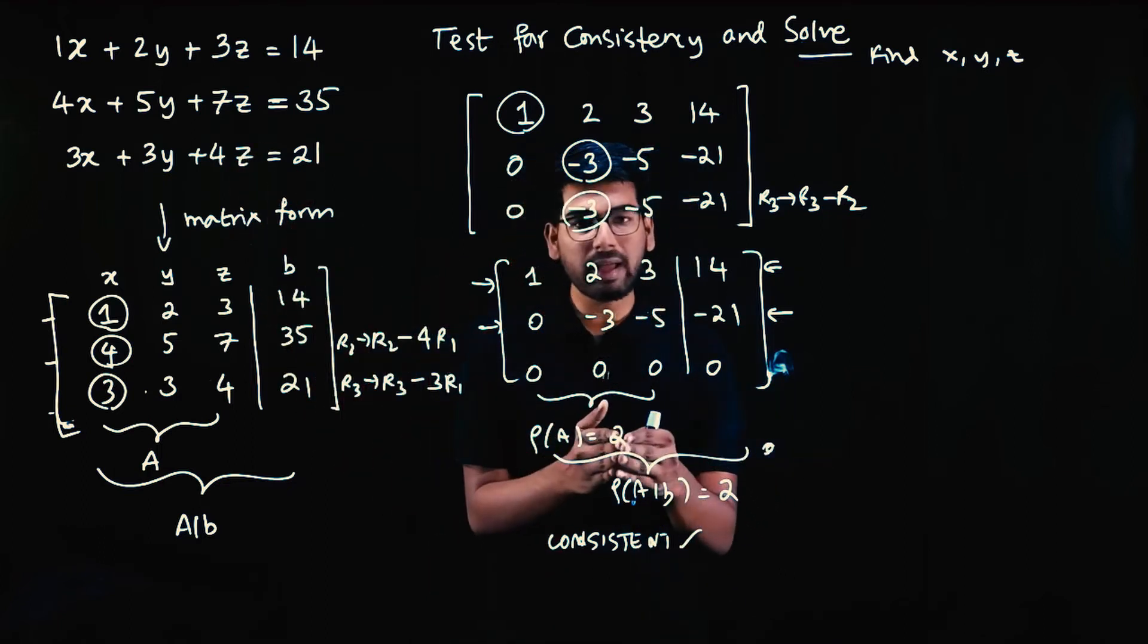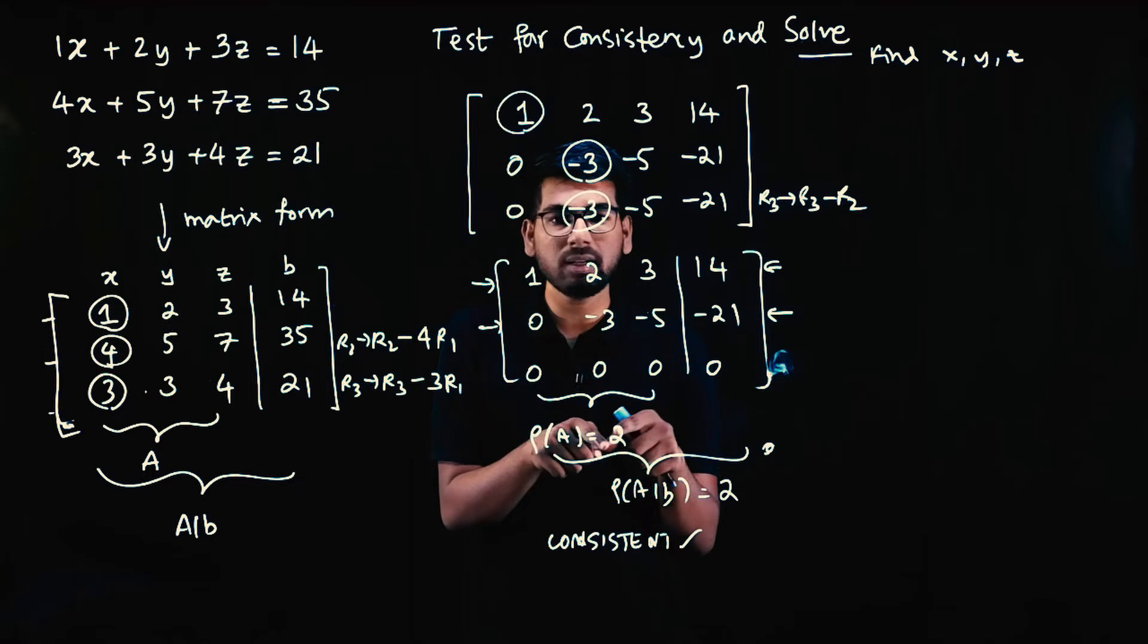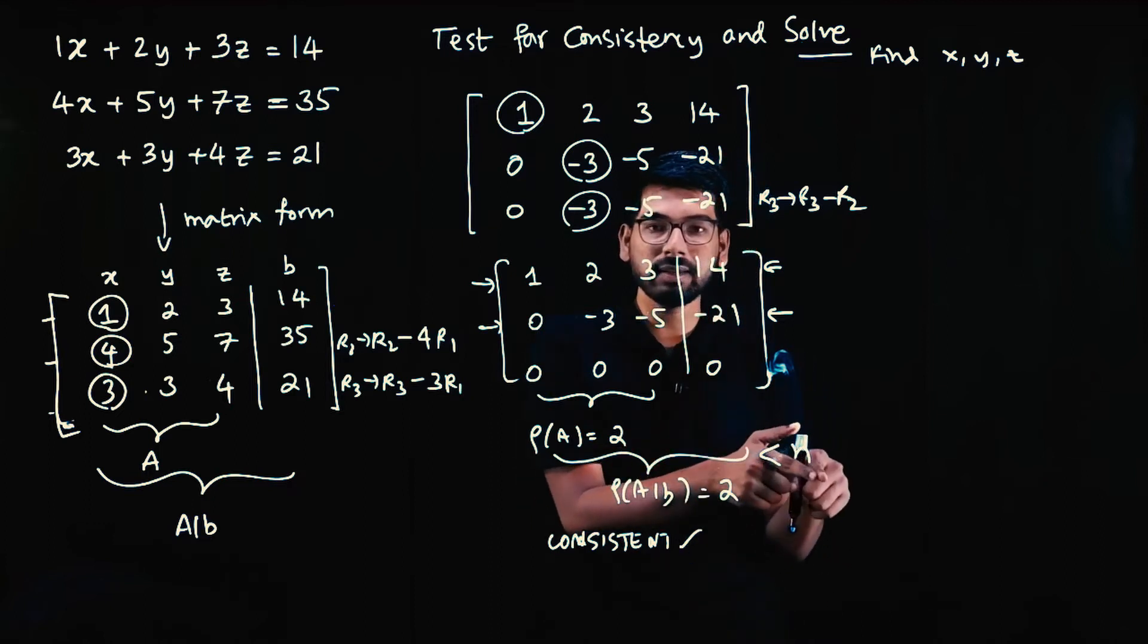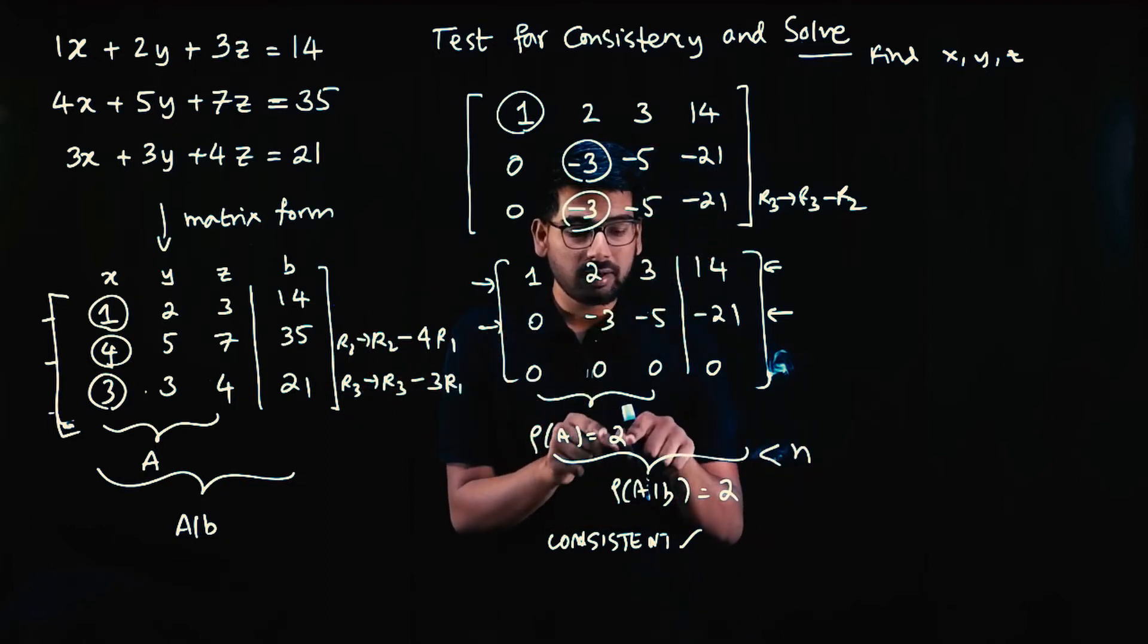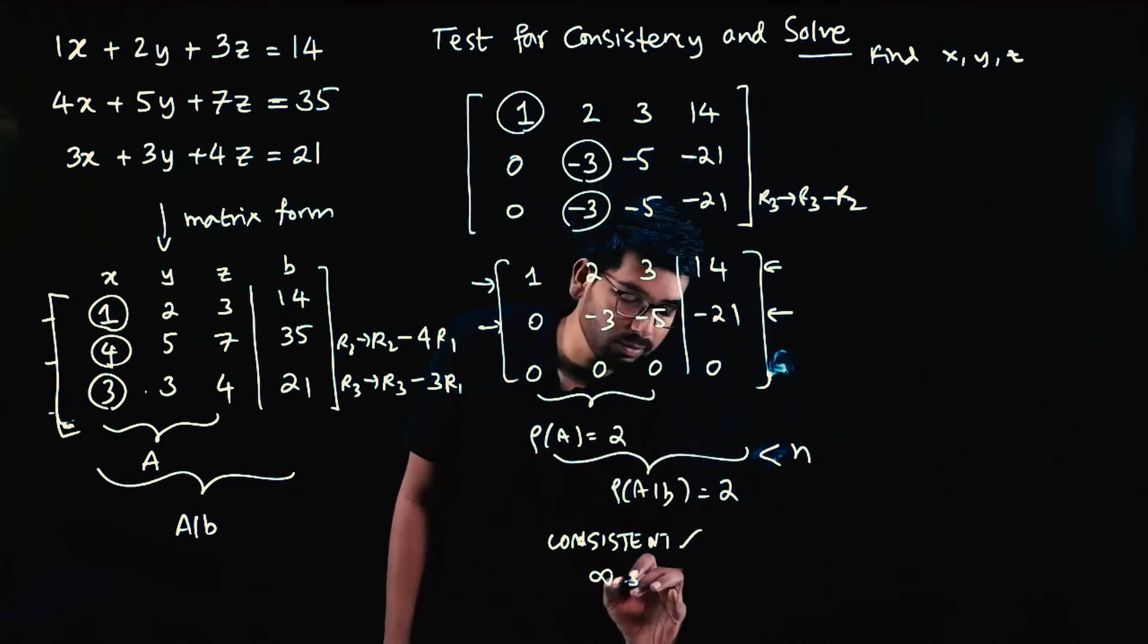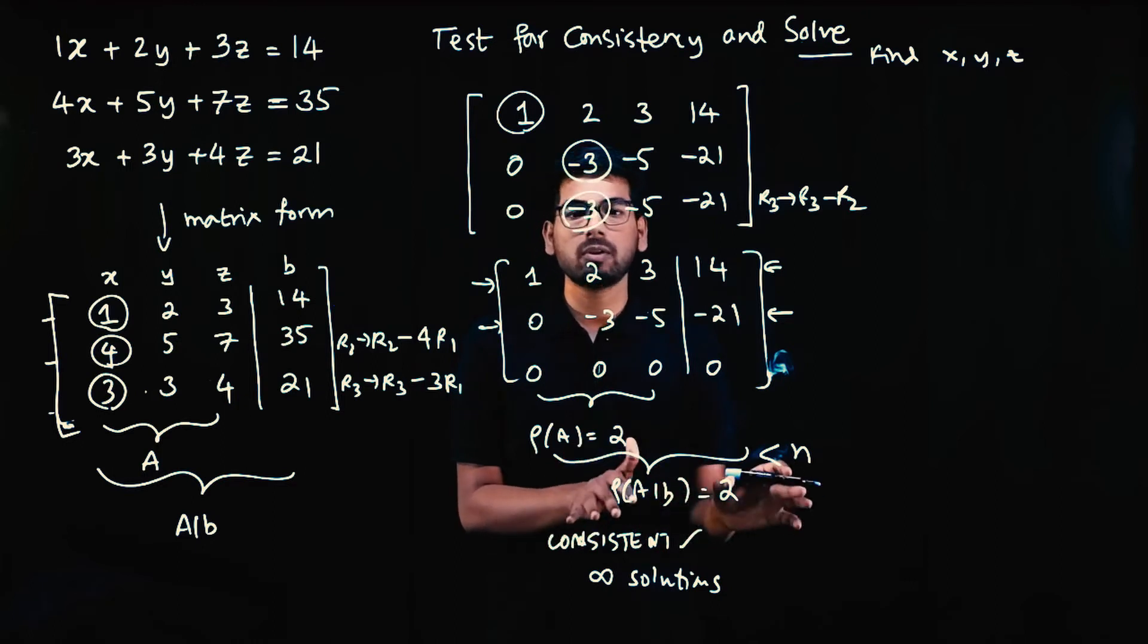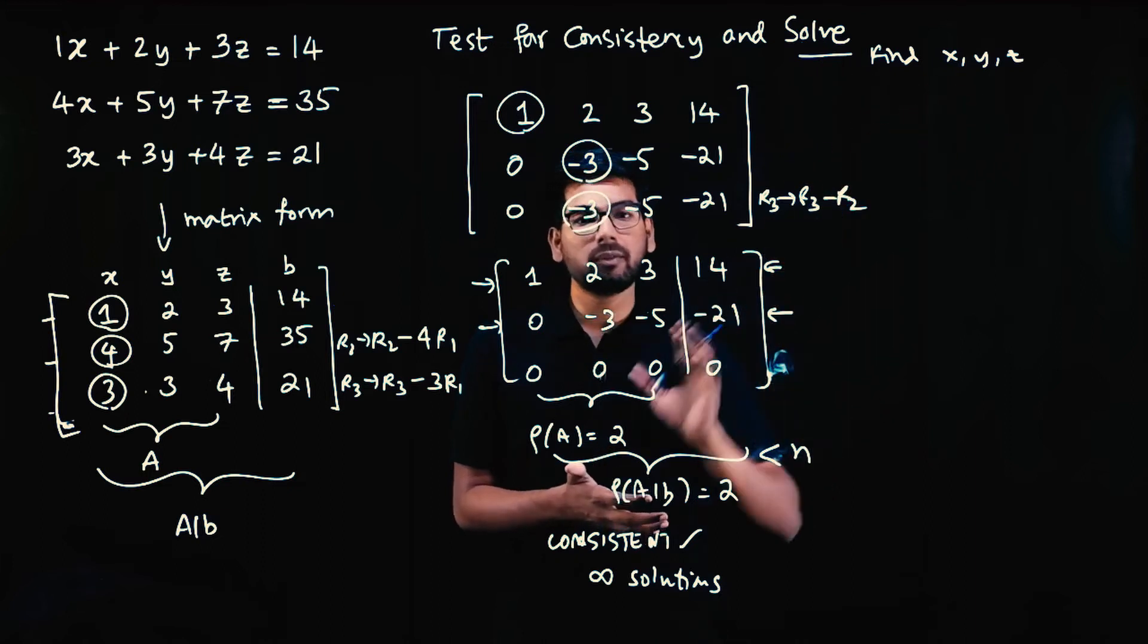One more condition: compare number of rows with rank. Number of rows is 3 (rows 1, 2, 3), rank is 2. This is less than n, where n is number of rows. If rank equals n (both 3), there's one solution. If rank is less than number of rows, there are infinite solutions. The system is still consistent but has infinitely many solutions.